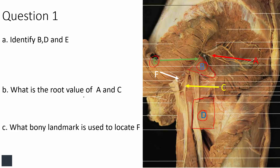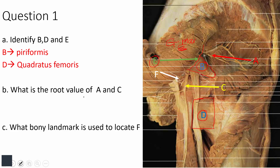Structure E is emerging from the infrapiriformic compartment and coming to supply the large structure which is gluteus maximus. If you identified E as the inferior gluteal nerve, that is correct. Those are the correct answers to the first part of the question. Next, what is the root value of A and C?